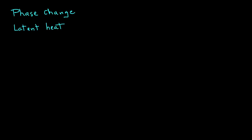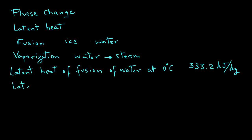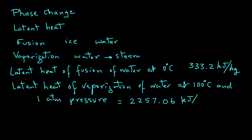It could be latent heat of fusion when ice, for example, is melted to water or it could be latent heat of vaporization when, for example, water vaporizes to steam. Note that the latent heat of fusion for water at zero degrees Celsius is 333.2 kilojoules per kilogram. And the latent heat of vaporization of water at 100 degrees C is 2257.06 kilojoules per kilogram.